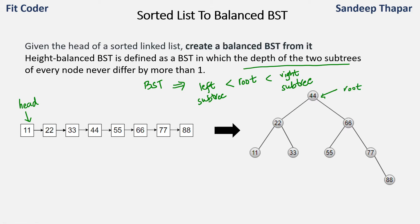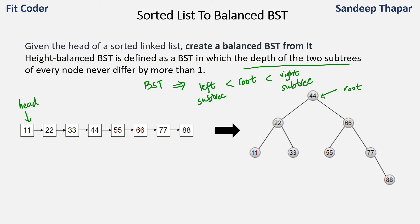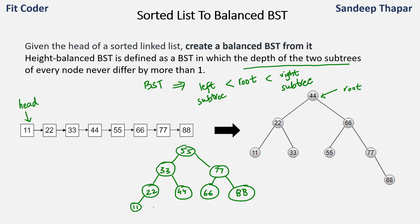We can see that for each node the left subtree is smaller and the right subtree is greater. For 22, 11 is smaller and 33 is greater. For 44, the entire left subtree is smaller and the entire right subtree has values greater than 44. The difference in height for each node is maximum 1. There can be multiple BSTs which can be created from this linked list — for example, one rooted at 55. We can create any height-balanced BST from this linked list, and there are various methods to solve this.